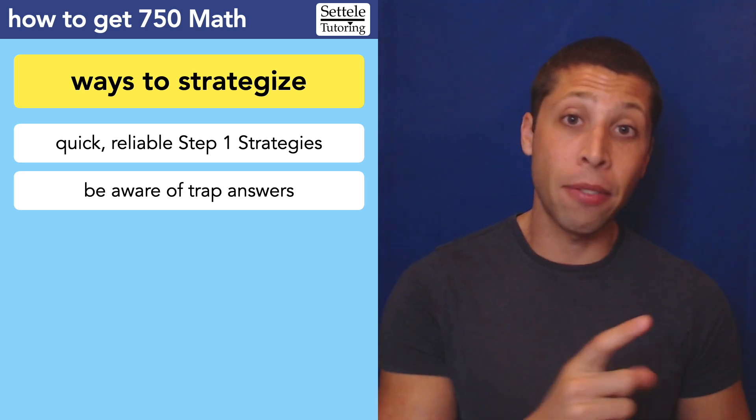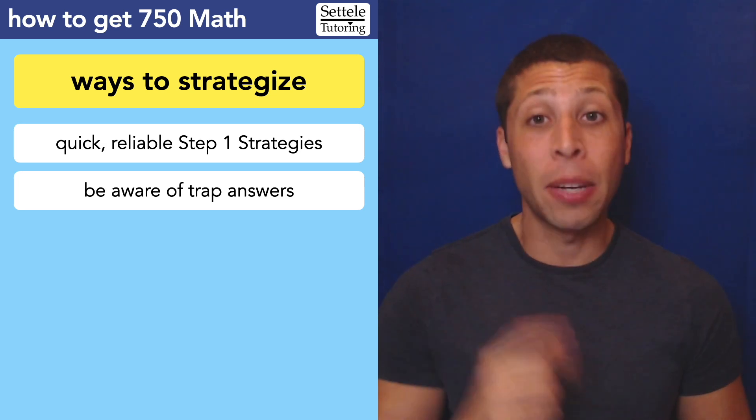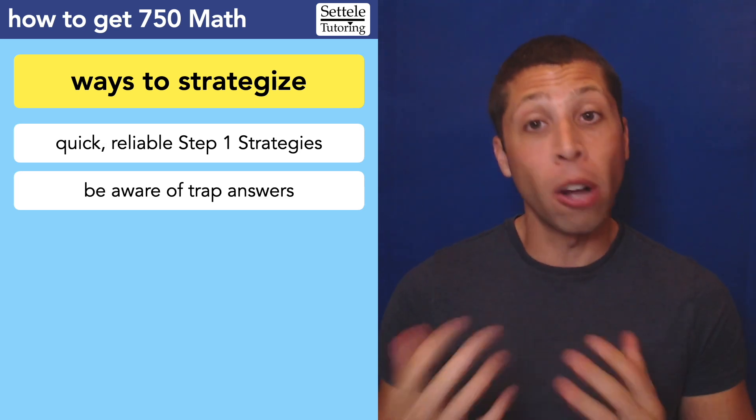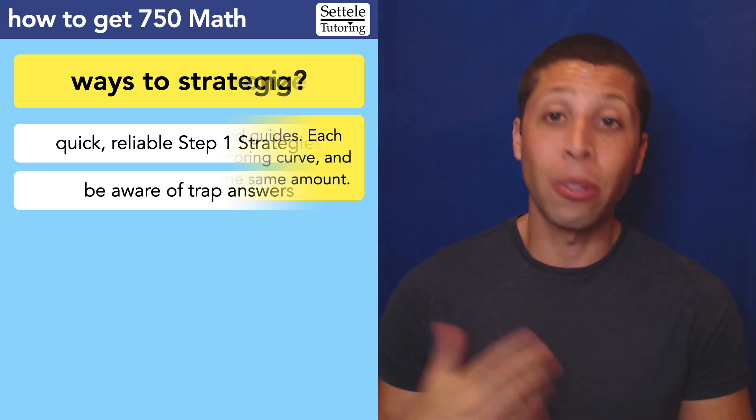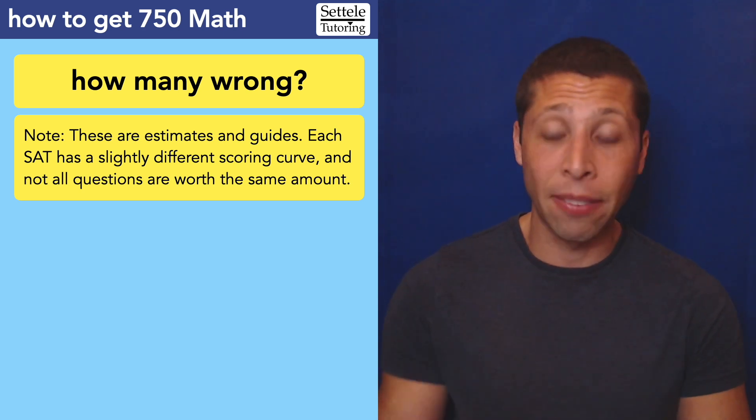For you, if you're getting a 750 on some of the practice tests and then walking out of the SAT and getting a 700 on the real thing, a lot of it probably comes down to trap answers. It also might just come down to pacing issues. So let's talk about how we're going to pace ourselves to maximize the number of points we're going to get to get that 750.